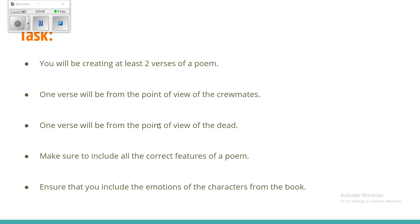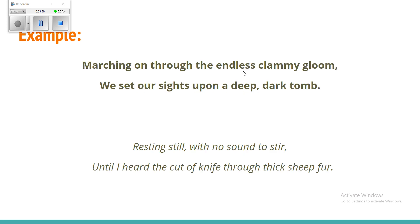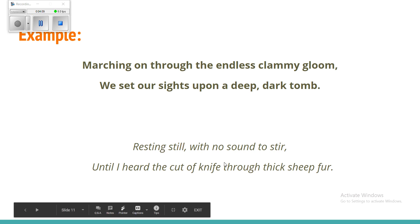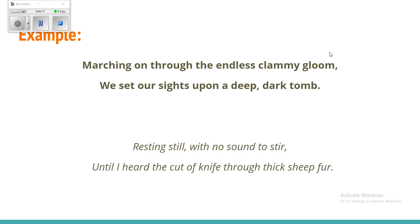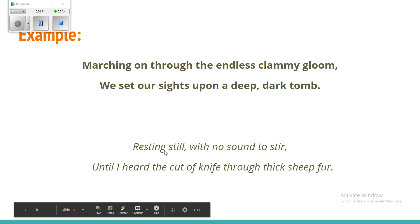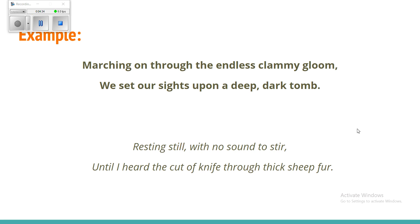All you're going to do is describe the events that are happening in the poem from the point of view of the dead and from the point of view of the crewmates. I've done a couple of example lines — two lines from the point of view of each character. For the crewmates: 'Marching on through the endless gloomy gloom, we set our sights upon a deep dark tomb.' You can see the rhyming, capital letters at the start of each line, and punctuation at the end. For the dead: 'Resting still with no sound to stir, until I heard the cut of a knife through thick sheep's fur.'